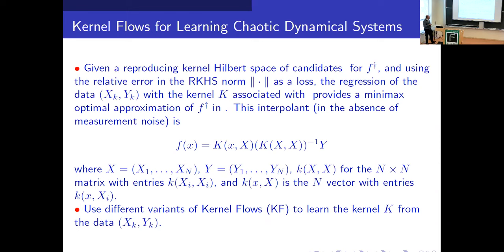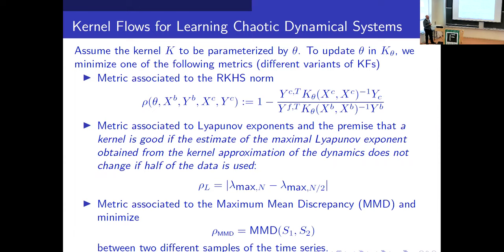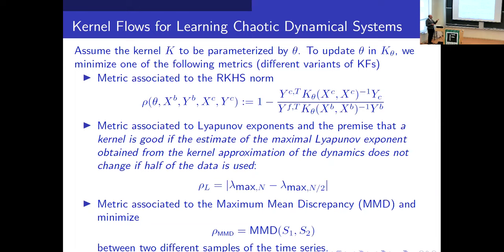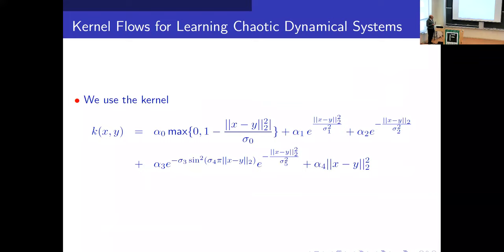Since we are dealing with dynamics, a pure regression approach is not necessarily the best one, so we extend kernel flows to different versions. One is to consider Lyapunov exponents, because we are interested in long-term behavior: we define a kernel as good if the estimate of the maximum Lyapunov exponent obtained from the kernel approximation of the dynamics does not change much when half the data is used — though you can also use other Lyapunov exponents, not only the maximum. Another approach uses the metric based on maximum mean discrepancy, looking at different subsamples of the time series and updating the kernel parameters by minimizing the MMD.